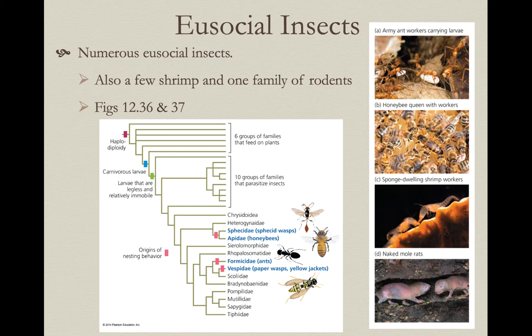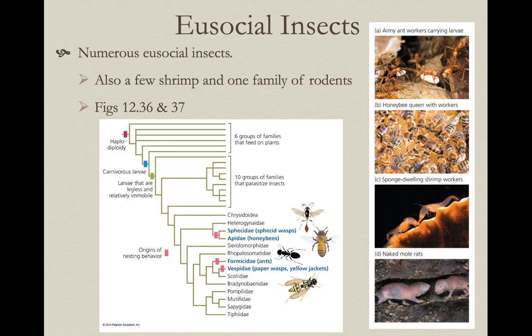I'd like to focus on why eusociality might be more common in the Hymenoptera. One of the things that Hymenoptera have that may predispose them to eusociality is their genetic system — haplodiploidy. There are also other things that may be linked to why eusociality is so common in these organisms, because many of them produce very complicated nests that may require a large degree of cooperation.